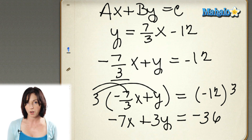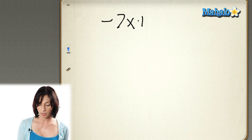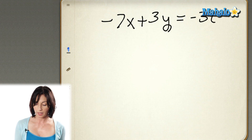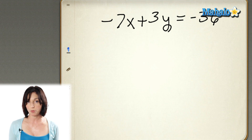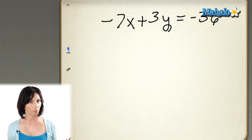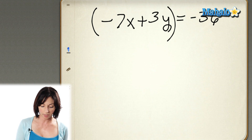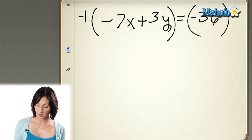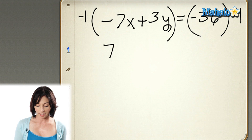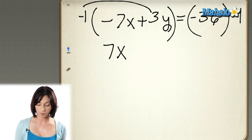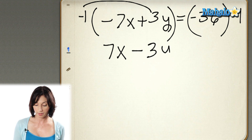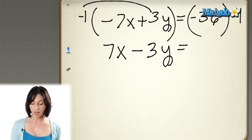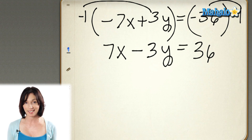But I would really like that number in front of the x to be positive, not negative. So we have negative 7x plus 3y equals negative 36. If I multiply both sides of this equation by negative 1, I can get rid of that negative sign in front of the 7 — it's perfectly all right to do that. You can do anything you want to the equation as long as you do it to both sides. Negative 1 times negative 7 gives me a positive 7, so I get 7x. Negative 1 times positive 3 gives me minus 3y. And on the other side, negative 36 times negative 1 just changes the sign — I get a positive 36.